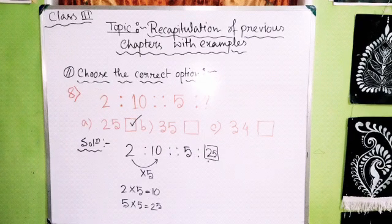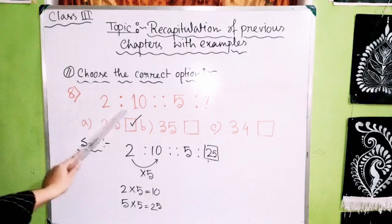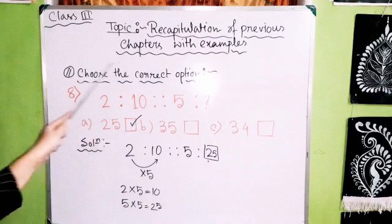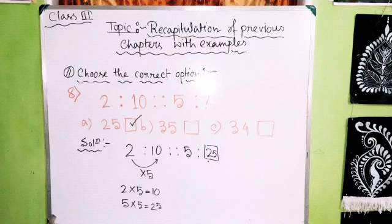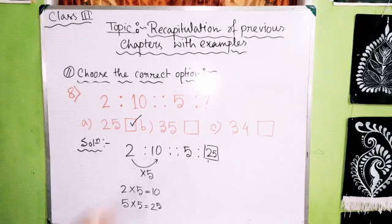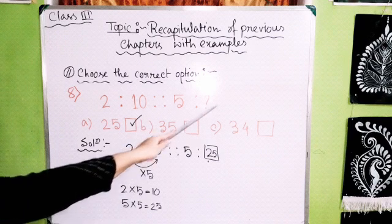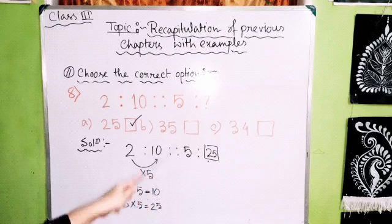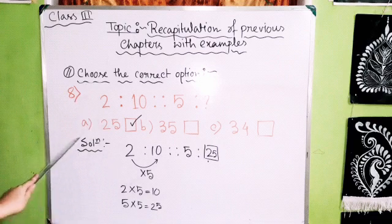Eighth question, also from mental math: 2 is to 10 as 5 is to what? Find the logic: 2 and 10 — 10 is in the 2 times table, so 2 multiplied by 5 equals 10. The rule is multiply by 5. Applying the same logic: 5 multiplied by 5 equals 25. The answer is Option A: 25.